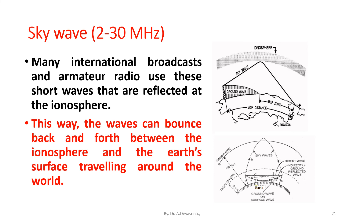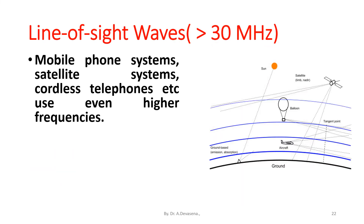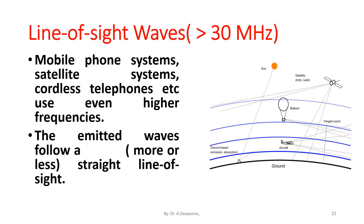Line of sight waves: mobile phone systems, satellite systems, cordless telephones, etc. use even higher frequencies. The emitted waves follow a more or less straight line of sight, as indicated here.